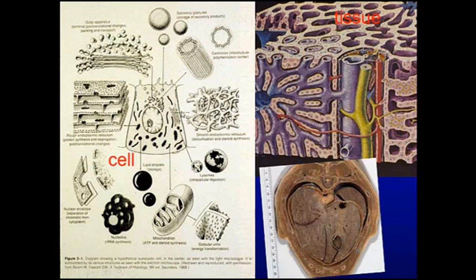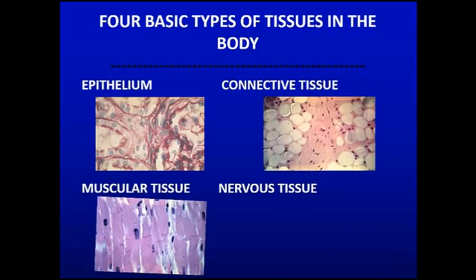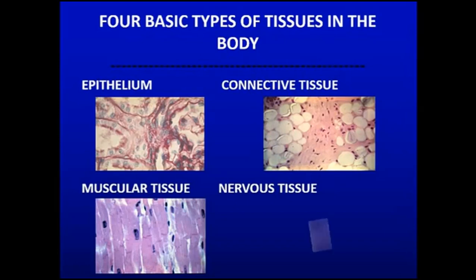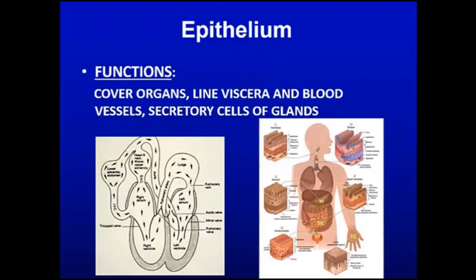So a cell is a unit of life, a unit of protoplasm. Groups of cells make tissue. Tissues get together and make organs, and organs make organ systems. There are four basic types of tissue: epithelium, that covers things; connective tissue, connects things; muscle tissue, which contracts and moves things; and nervous tissue, which is for communication.